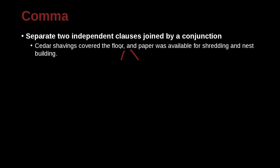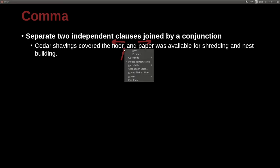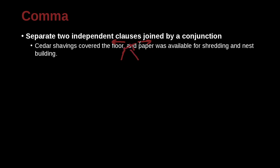A conjunction is a word that can bring two parts of a sentence together. Now if you have a comma and a conjunction together, that tells you that before the comma there must be a subject and a verb — meaning it can be a whole sentence. 'Cedar shavings covered the floor' — is that a sentence? Yes. I could put a period there. And 'Paper was available for shredding and nest building' — is that a sentence? Yes. So this could be two sentences. If you have two independent clauses, the way to bring them together is not just a comma, but a comma and a conjunction. You need both.